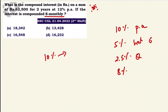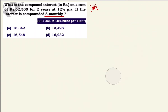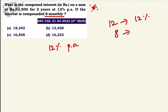If it is 12% for 12 months, then for 8 months the rate is 8% per period. And 2 years equals 24 months, so 24 divided by 8 gives 3 periods. So we calculate 62,500 at 8% for 3 compounding periods.